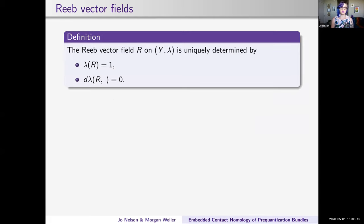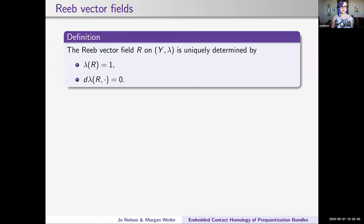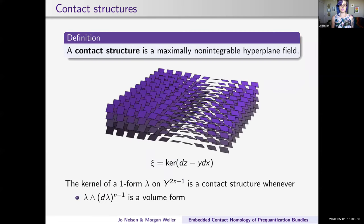The next thing we're going to be interested in discussing is Reeb vector fields and more specifically periodic orbits of Reeb vector fields. The Reeb vector field is the analog of a Hamiltonian vector field in contact geometry, and it is uniquely determined by the equations: lambda of R is one—that's a normalization condition—and then d lambda is degenerate exactly in the R direction. Using formulas from differential geometry, that last equation tells us that the contact planes are invariant under the flow of R.